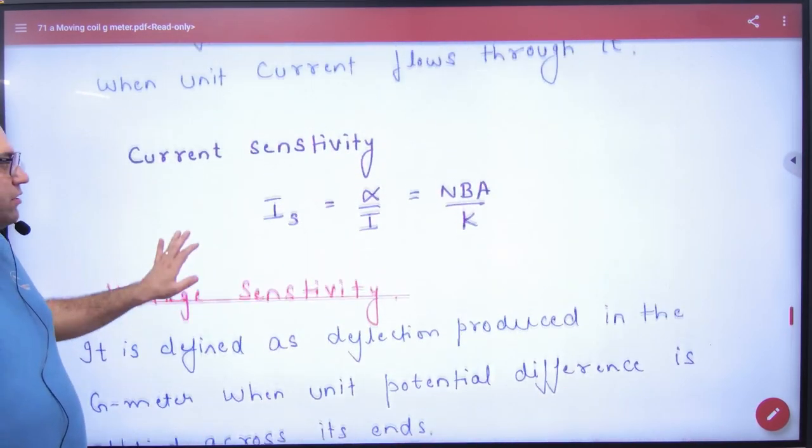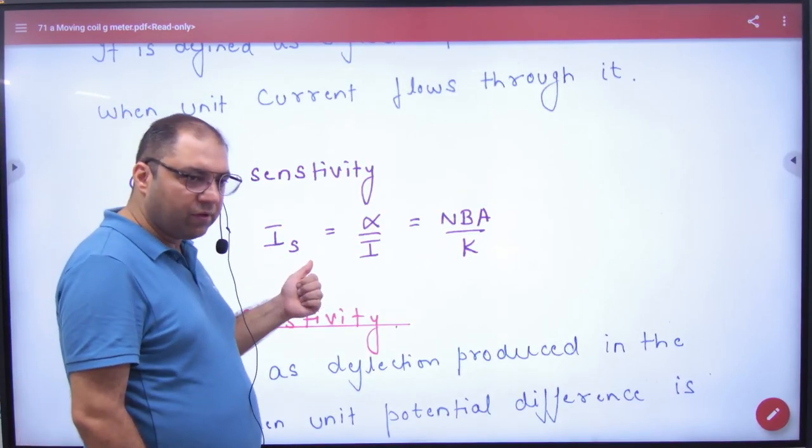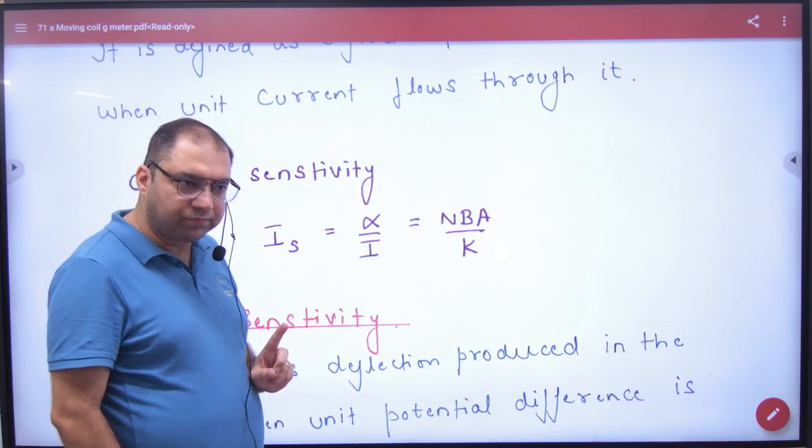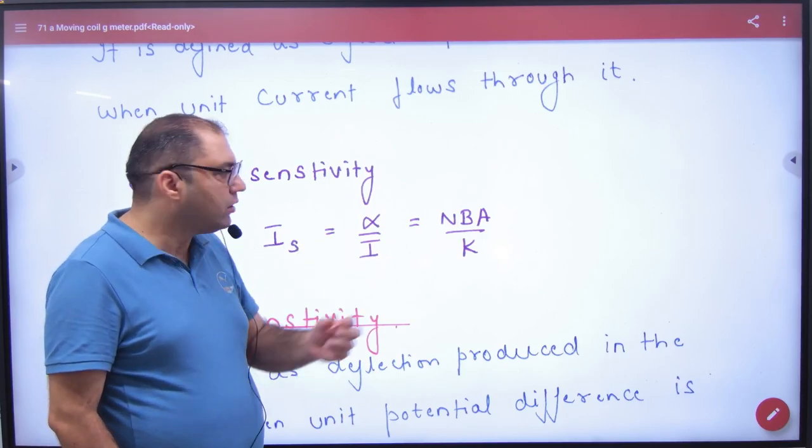How can you increase current sensitivity? Mathematically, if you want to increase it, then increase the number of turns, or increase the magnetic field, or increase the area of coil, or decrease the K.